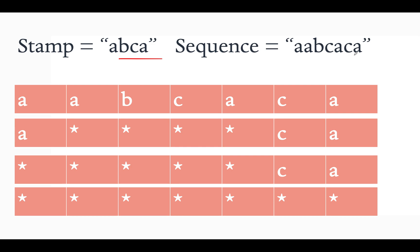What we will try to do is generate the basic string from the given sequence string. The basic string — our target — is all stars: star star star star star star star.